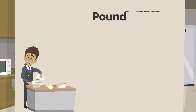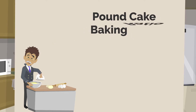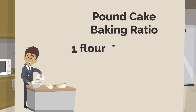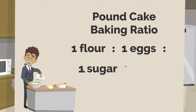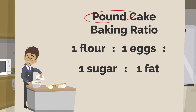One of the most well-known baking ratios is one for pound cake. I learned it as a pound of flour, a pound of eggs, a pound of sugar, and a pound of butter — which is why it is called a pound cake.